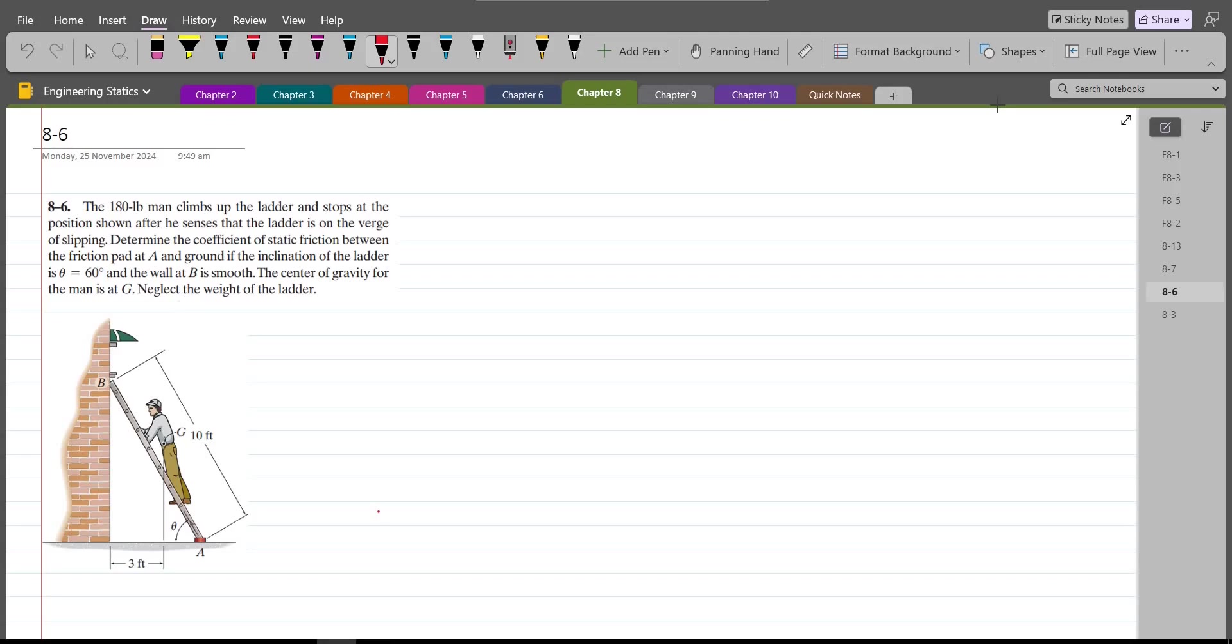According to this problem, we have the 180 lb man that climbs up the ladder and stops at the position shown after he senses that the ladder is on the verge of slipping. We have to determine the coefficient of static friction between the friction pad at A and ground if the inclination of the ladder is 60 degrees and the wall at B is smooth. The center of gravity for the man is at point G. We have to neglect the weight of the ladder.